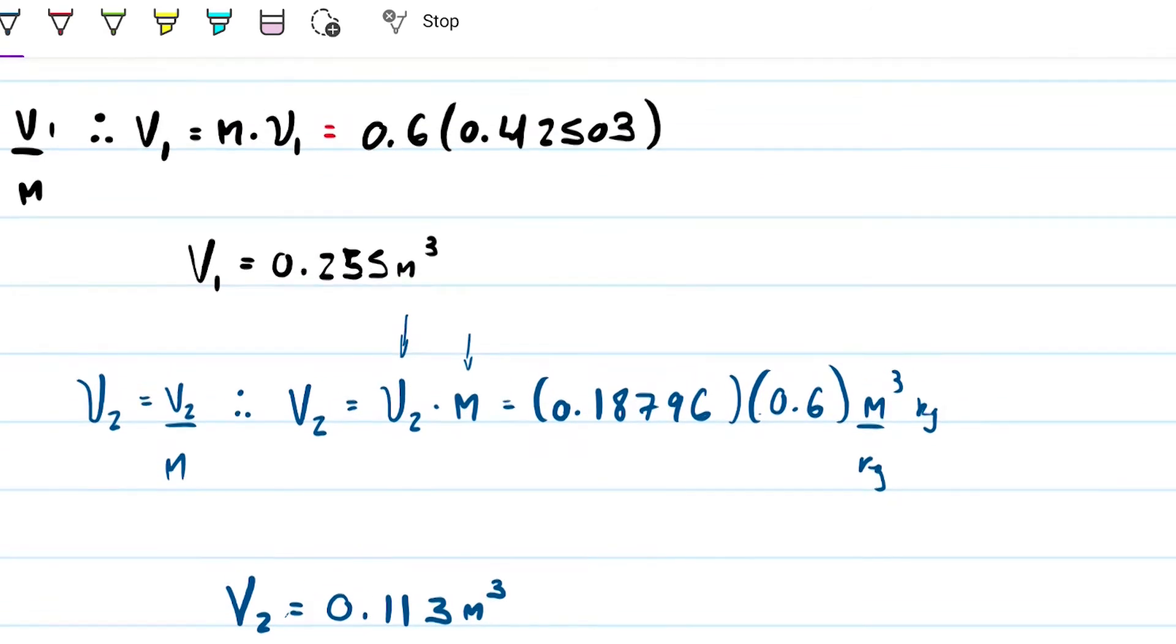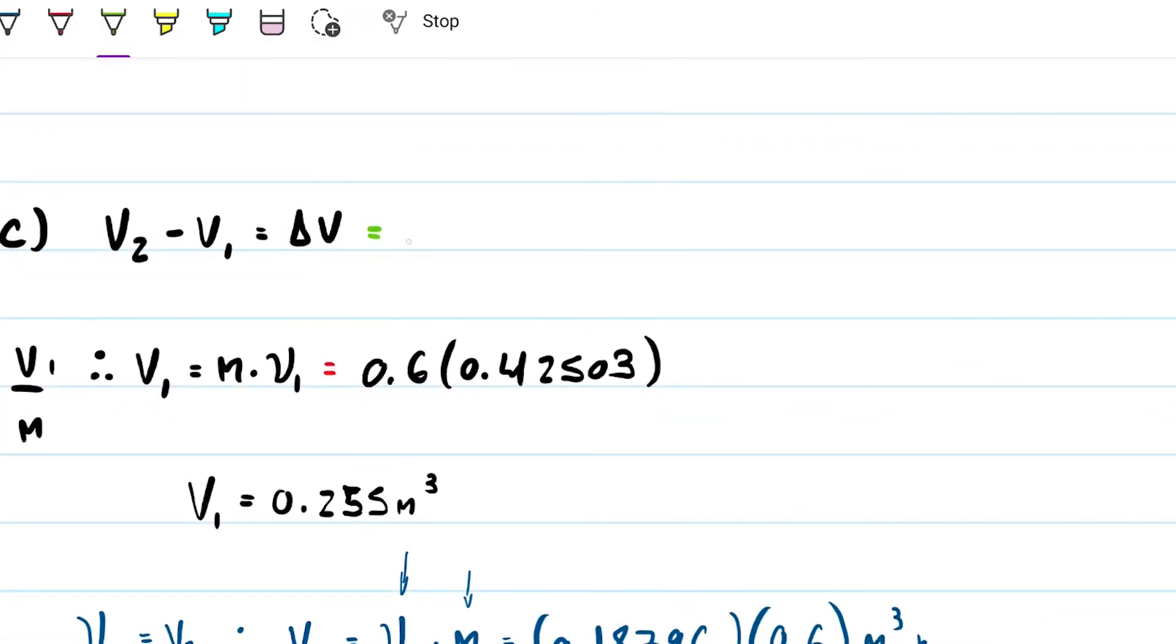Now, for the fun part, we just subtract the 2. And we get that this is about negative. So we do 0.113 minus the 0.255 we had. And you get this as a negative 0.142 meters cubed. And that is our answer right there, for part C.